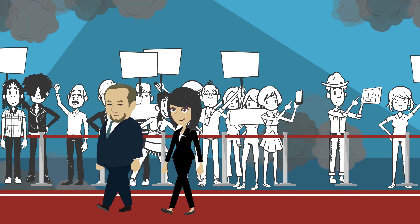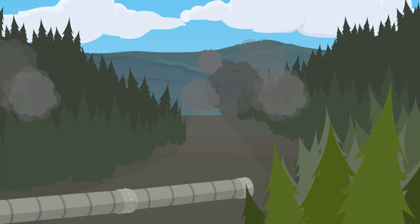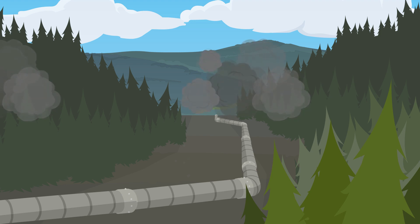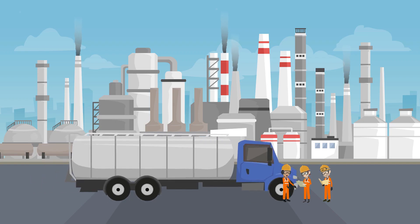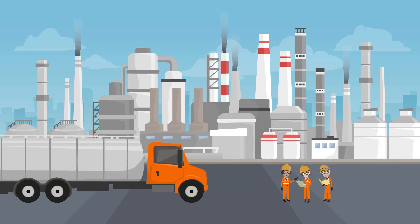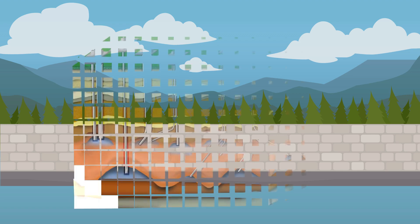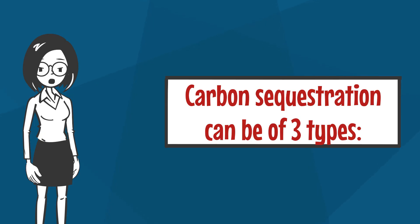The CO2 produced from industrial processes or the atmosphere could be collected and sent through pipelines or gas tankers to fields where it can be injected into depleted reservoirs.